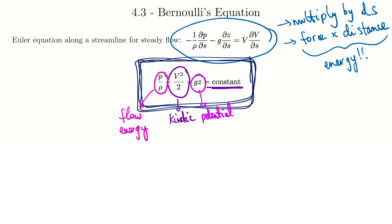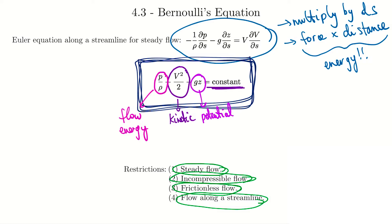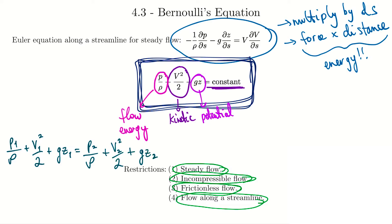Remember, you need to be really careful when you use Bernoulli's equation. The restrictions are explicitly listed: it's only applicable for steady flow, incompressible flow, frictionless flow — inviscid flows — and only when you have flow along a streamline. We derived this expression along a streamline, so you have to remember it's only applicable along a streamline. If you're looking at a streamline and you know this expression has to be constant, it's saying if you measure one pressure at point one, this term has to equal some point further along the streamline — point two.